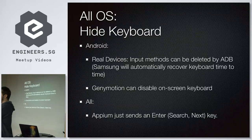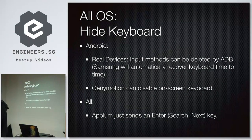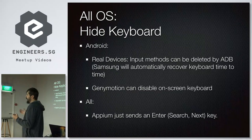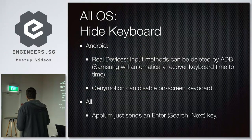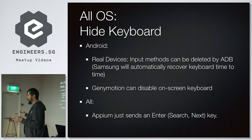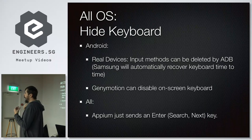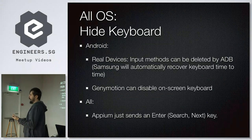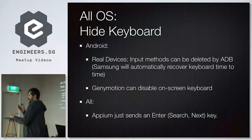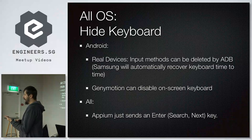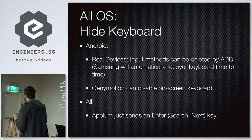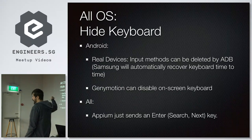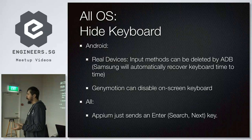Another problem is keyboard hiding. When you enter text into a text field, the keyboard shows and hides half the screen. For simulators you can disable the keyboard easily — it won't show at all, just use send_keys. For iOS it's impossible to truly hide the keyboard — Appium's hide_keyboard method just clicks the enter button, which may navigate away. On real Android devices you can use ADB to disable all input methods, so Android can't show any keyboard.